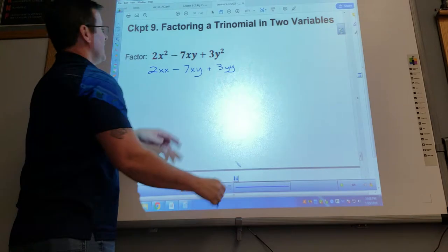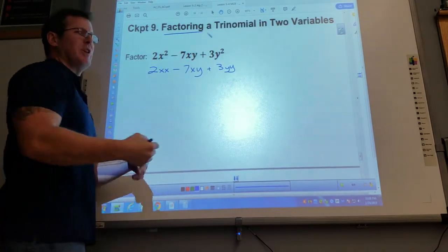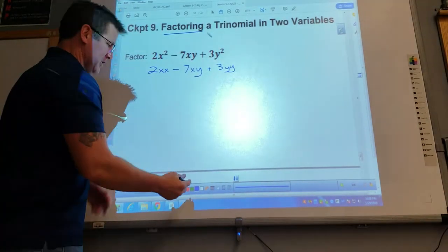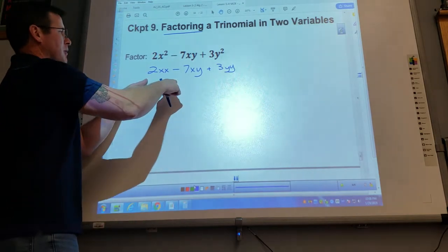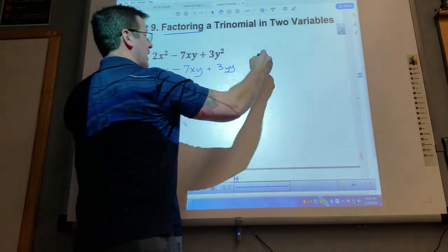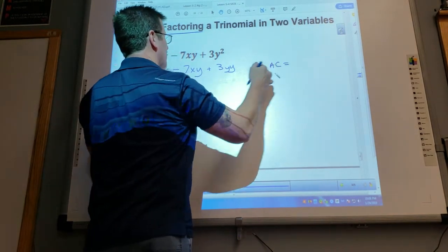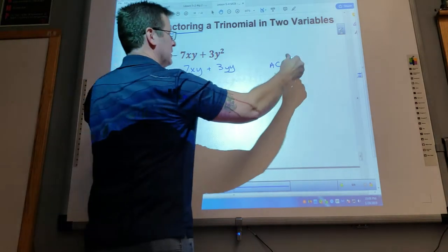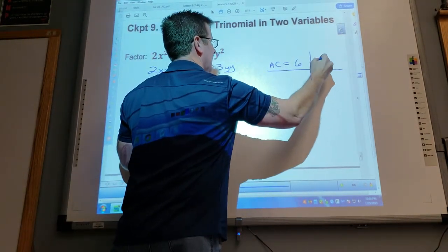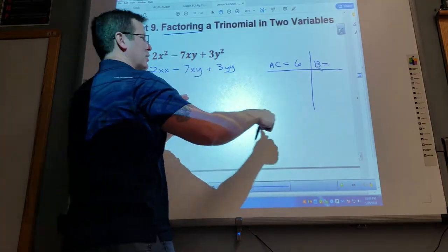But you know what I'm going to do? It's factoring, so I'm going to use the same process I've been doing for the last few problems this whole section. I'm going to use my AC chart and ask myself: what two numbers multiply to equal this product, A times C, and add to the middle term?